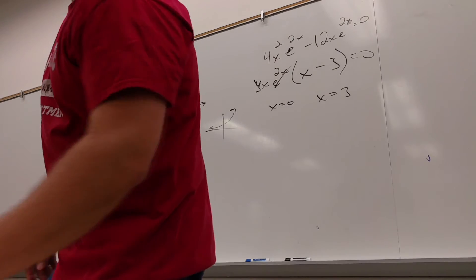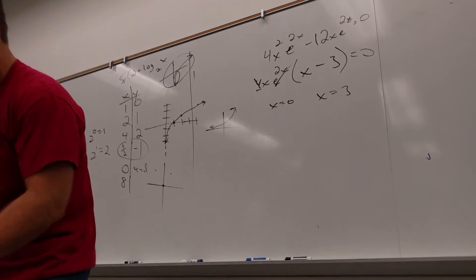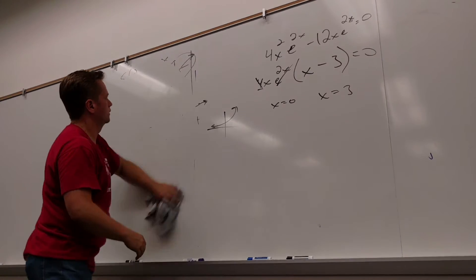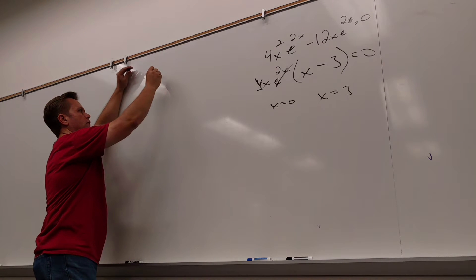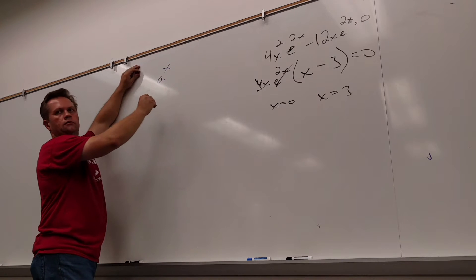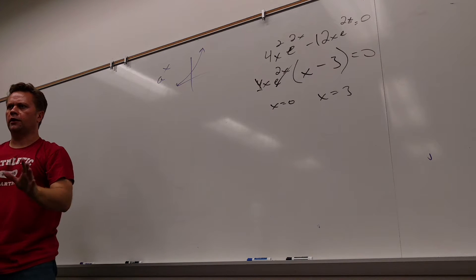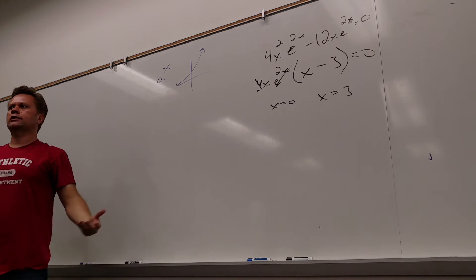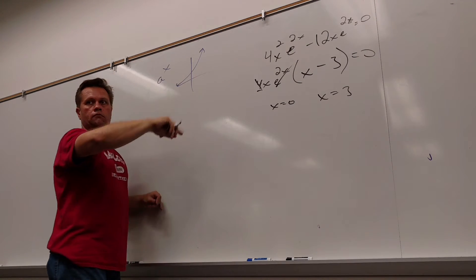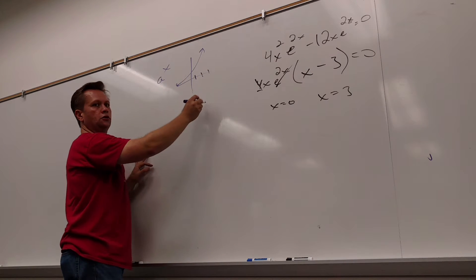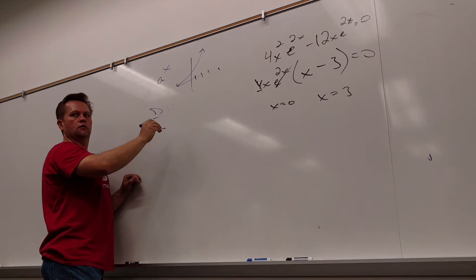For problem 2A: f of x equals 2 to the 6x plus 3. Let's start off with what a to the x looks like — you have to know the shape. If I asked for a rough sketch with no scale, you should be able to give me that. What does that imply about the domain? Are there any x values you're not allowed to use? No — every x value has an output. So the domain is all real numbers.